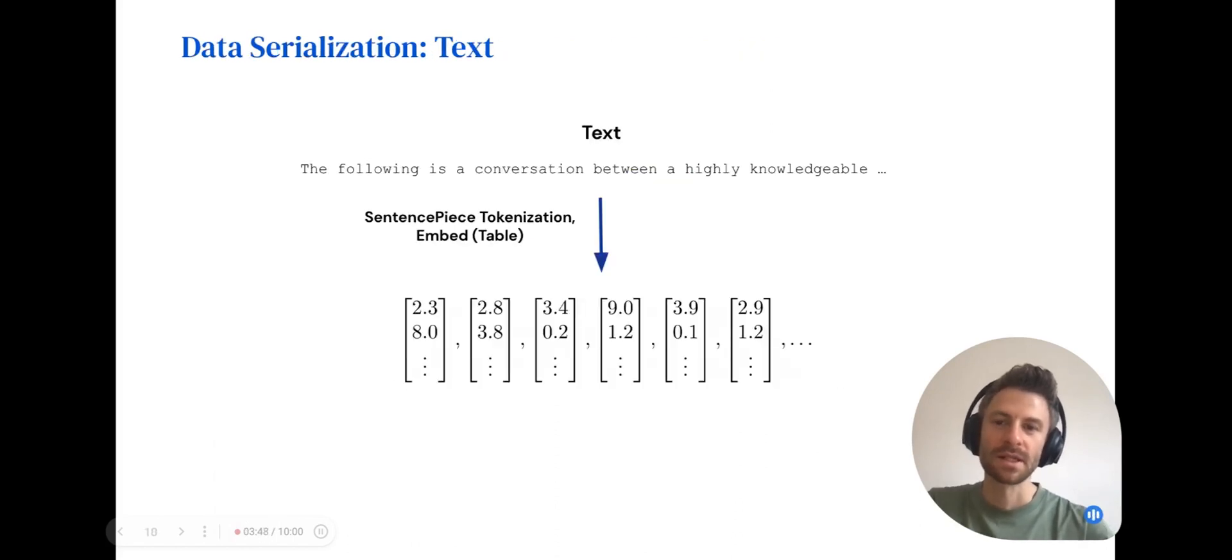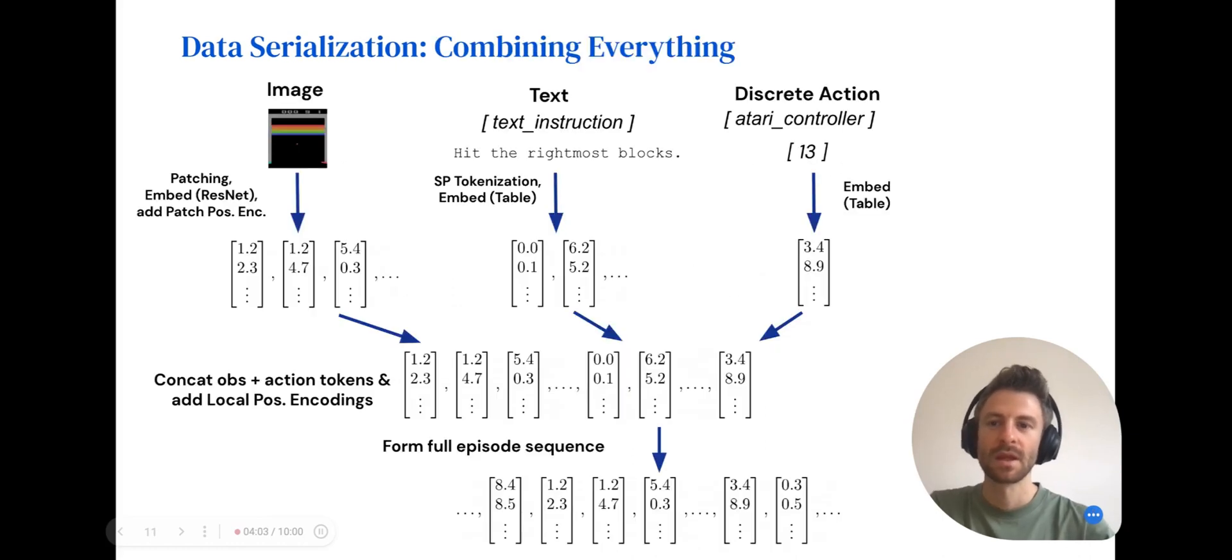For text, we use a sentence piece tokenizer to tokenize the text and then look up embeddings for each token. This is really identical to how most transformer-based language models process text, and if you're familiar with that, then you'll also be familiar with the way we handle it.